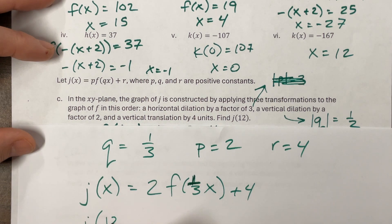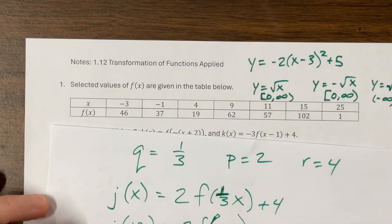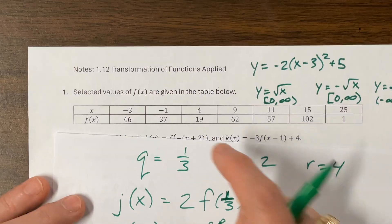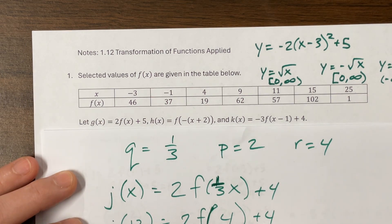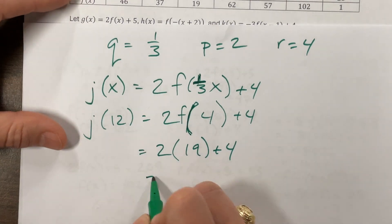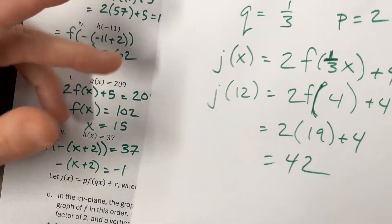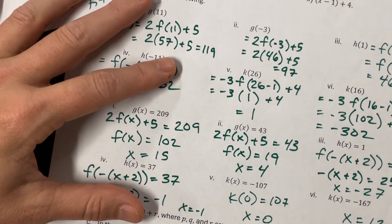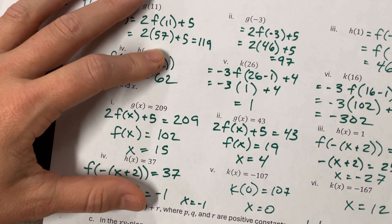So J of 12 would equal two times F of here's my parentheses. One third of 12 is four plus four. Do we know anything about we do? Oh, good. We do know something about X of F of four. And so this is two times 19 plus four. Sorry. You couldn't see what I was doing. 38 plus four is equal to 42. Huh? Goodness. That was embarrassing. I mean, anyway, I'm good, but I'm not perfect. So what did we say? J of 12 ultimately equals 42.